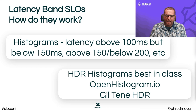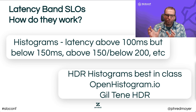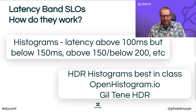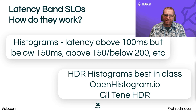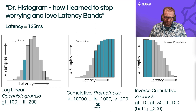Latency bands work with histograms. For latency-based SLOs, in enterprise settings you probably want around 99.95% of requests below a certain threshold. Histograms give you bins where you can capture latency above 100 and below 150 milliseconds, etc. HDR histograms are generally best in class — there's openhistogram.io, which is excellent, and Jill Teen's HDR histogram, which is also very good.